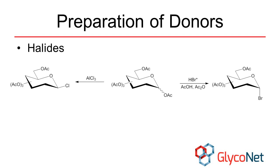Chlorides form the kinetic product first and do not anomerize. The alpha-bromide anomers are the thermodynamic product, and beta-bromides will anomerize to the alpha-anomer with prolonged reaction times.